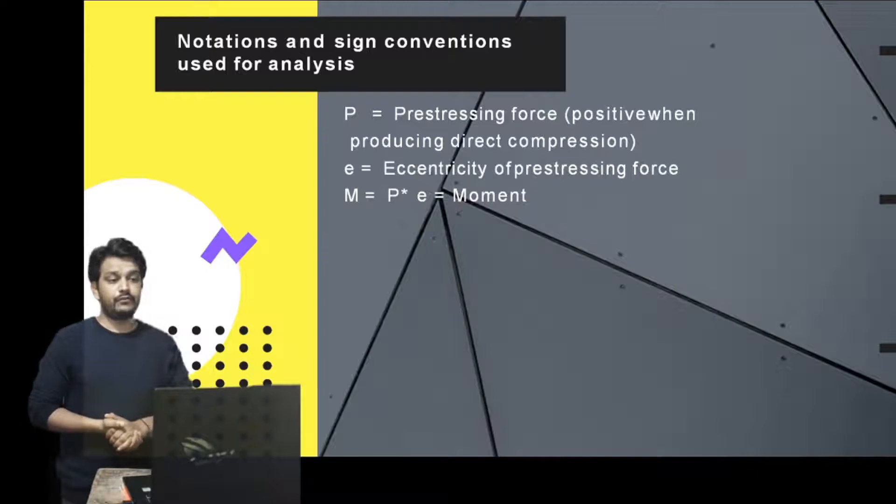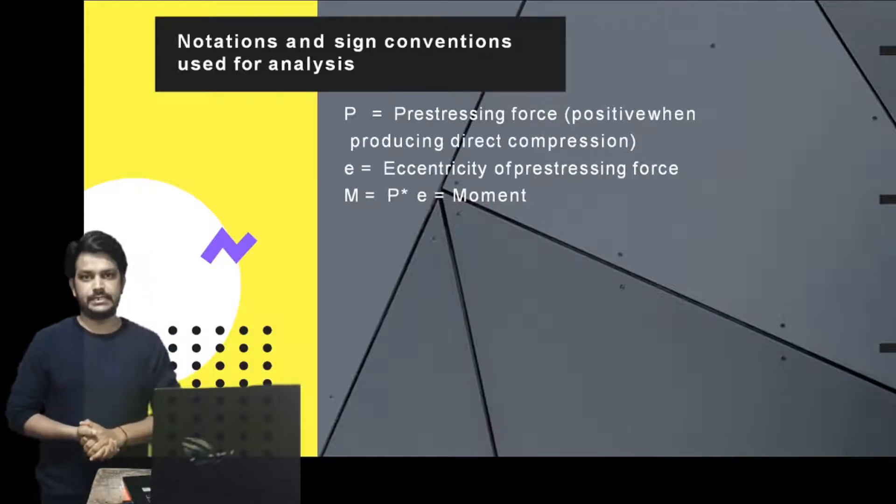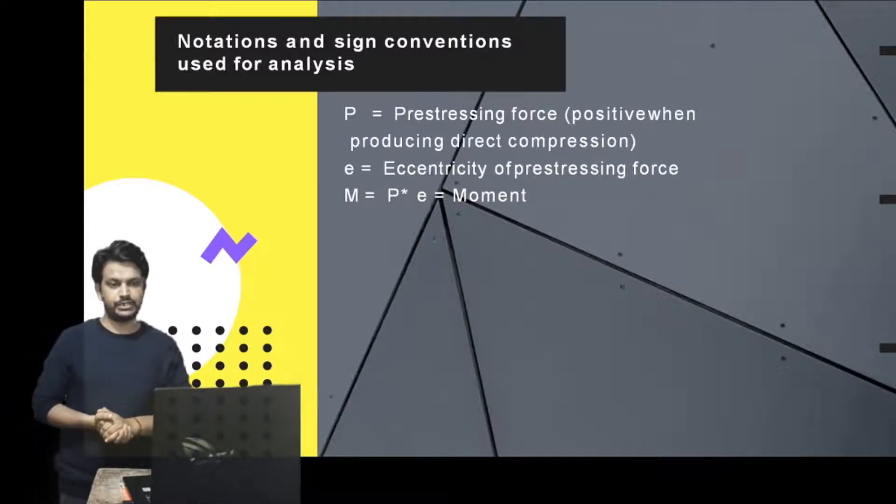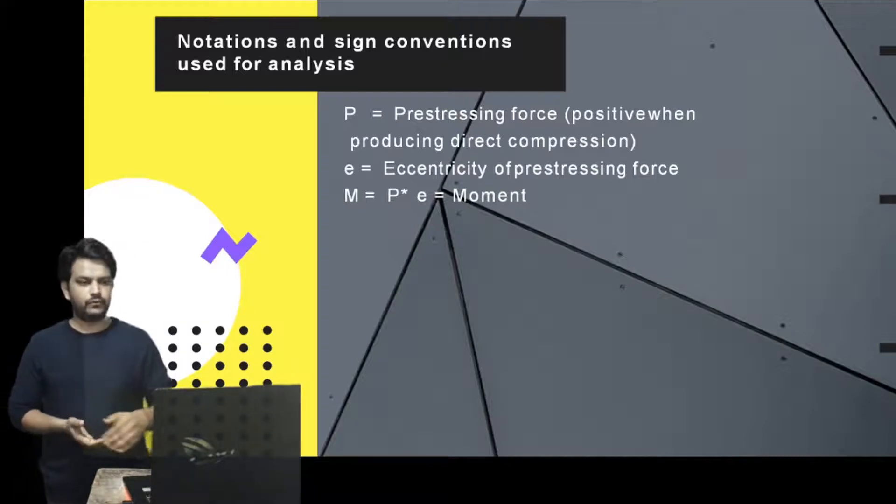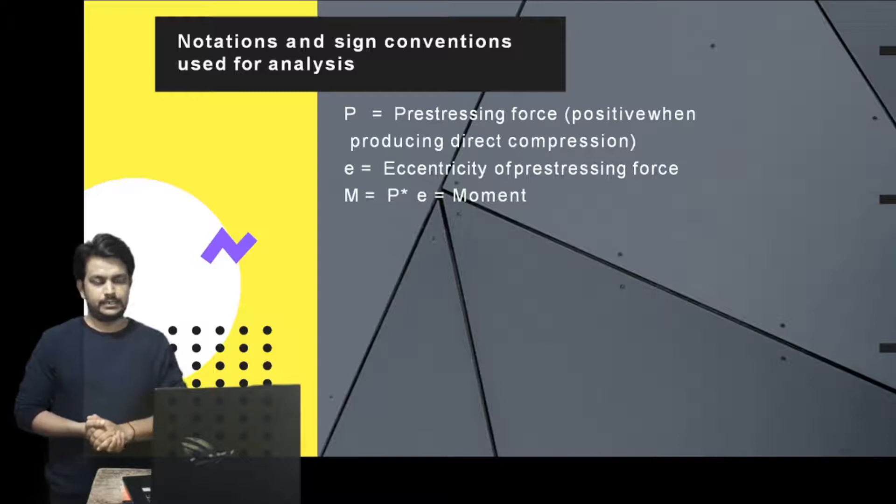e is the eccentricity of prestressing force. We will discuss this in detail later on. M is the moment, that is P times e, the prestressing force multiplied by its eccentricity.